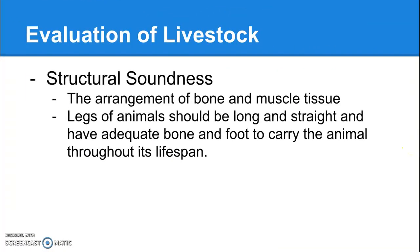Structural soundness is the arrangement of bone and muscle tissue, specifically in the legs. You want the legs of animals to be long and straight, and you also want them to have adequate bone and foot to carry the animal throughout its lifespan. Especially with beef cattle that are turned out in a herd, a bull needs to be able to carry himself through a pasture and breed all of those females.